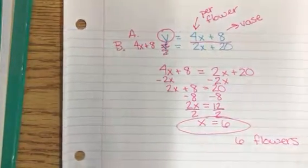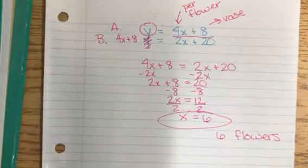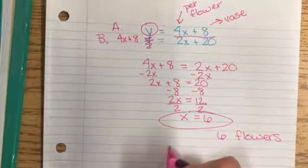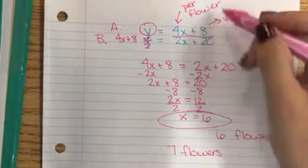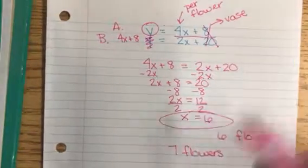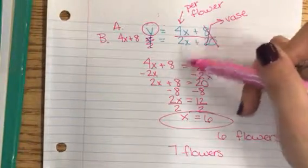Which means I can then use that to calculate some more information. If I were to buy seven flowers, the vase is no longer important.